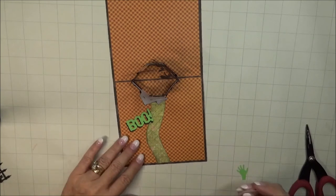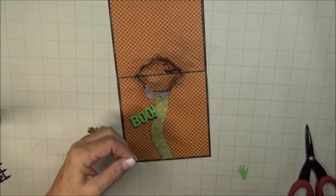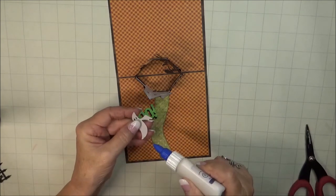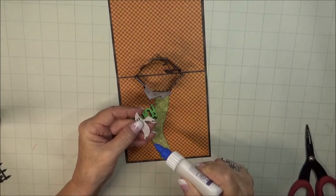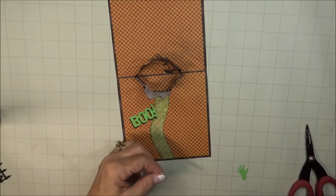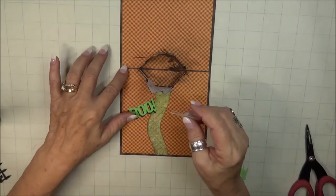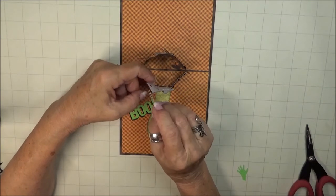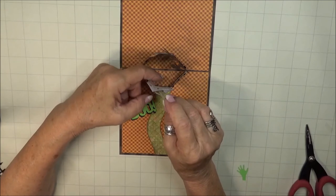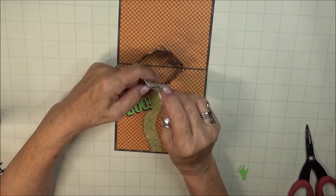Now for the ghost that I've cut from vellum, and I'm going to add just a little touch of glue to the front of the bottom of him, and then he's going to go right in one of those windows in the castle, making him appear to be flying out.